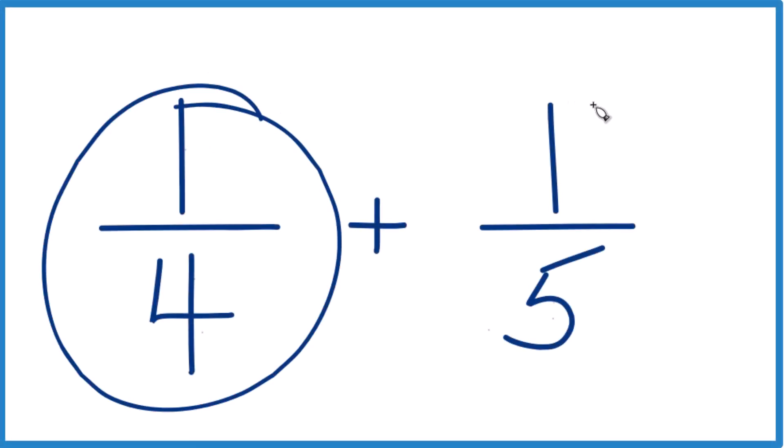If you need to add 1 fourth plus 1 fifth, here's how you do it. What we need to do is find a common denominator. So we need the same denominator here.